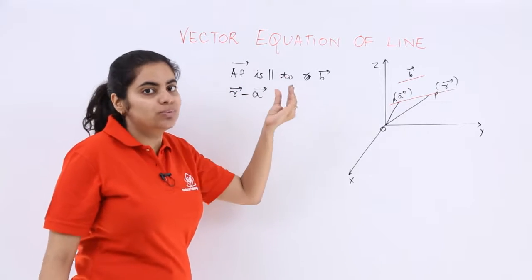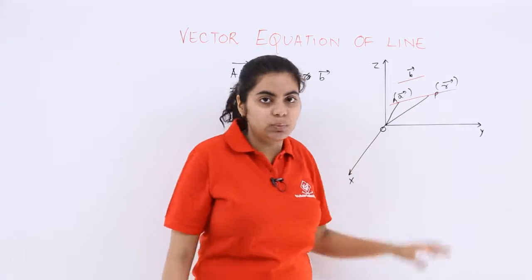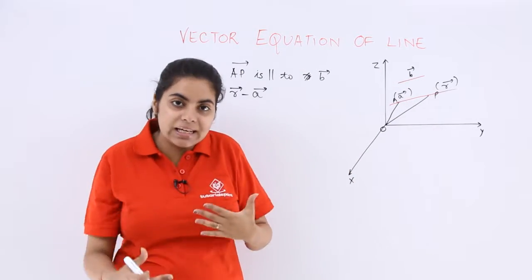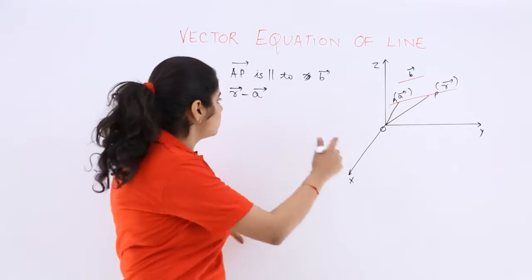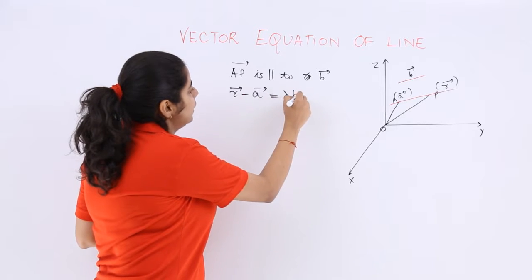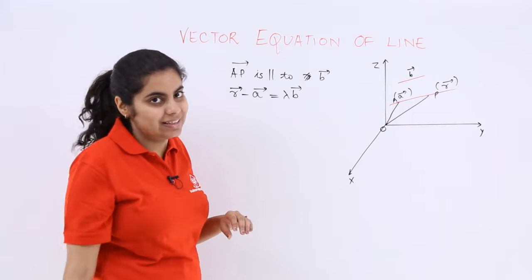Since it is parallel to, that means either it is equal or some scalar multiplication is possible. So I write it is equal to lambda b where lambda is a scalar.